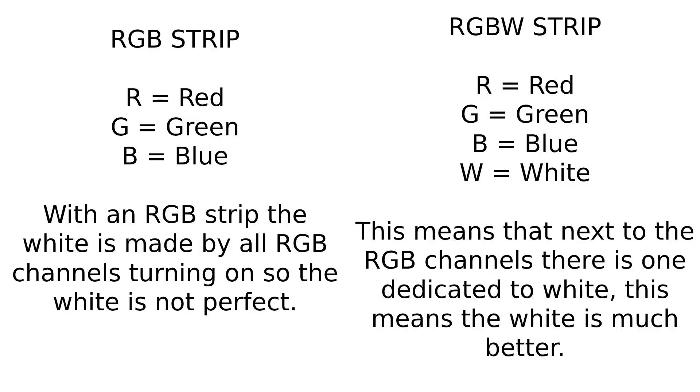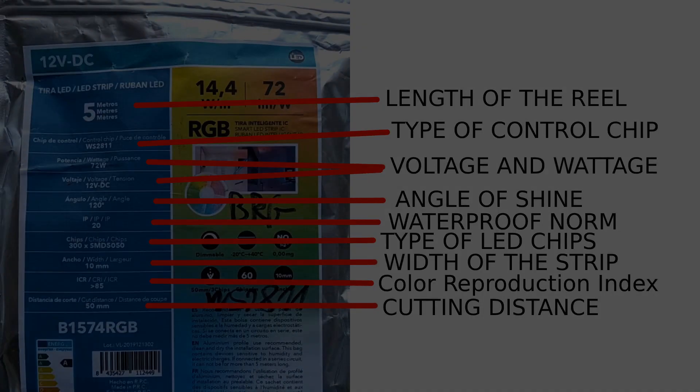Voltage drop and other topics I mention also apply to those strips. Before choosing color-changing strips, know the difference between RGB and RGBW. RGB strips have three channels for red, green, and blue. An RGBW strip has an extra dedicated white LED channel. So if your priority is a nice white mood light for a kitchen or bedroom, I would go for an RGBW strip just because of that extra dedicated white channel.